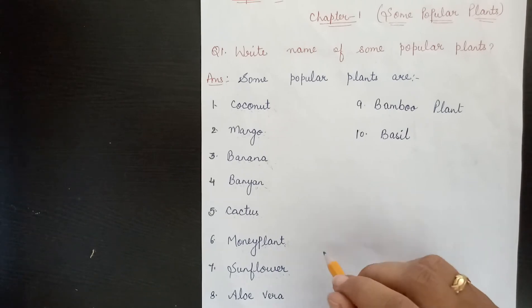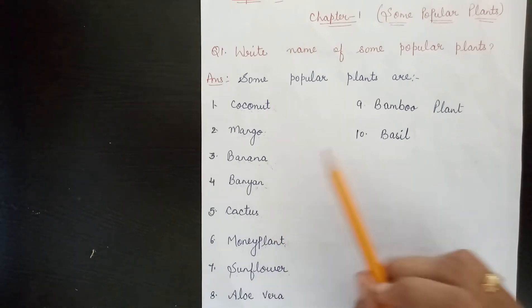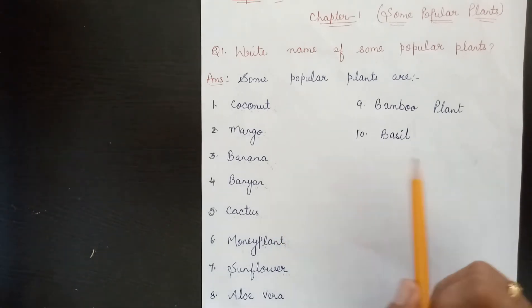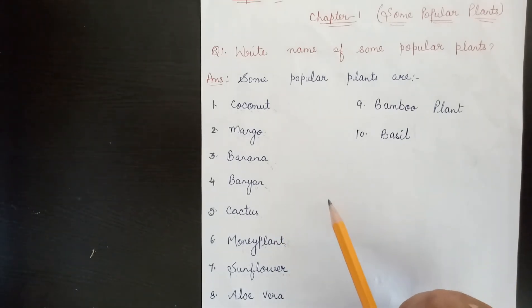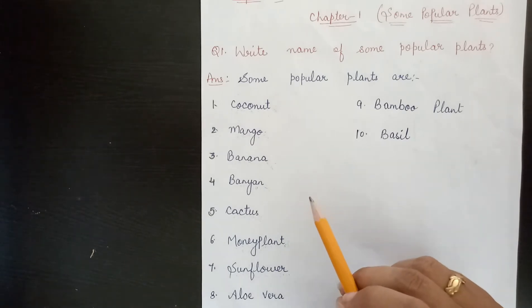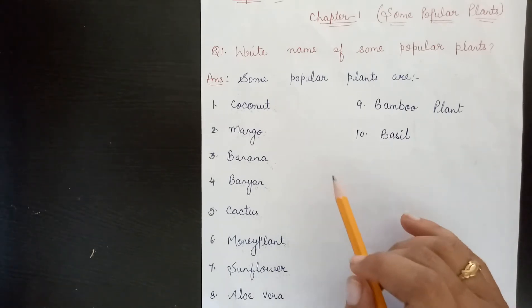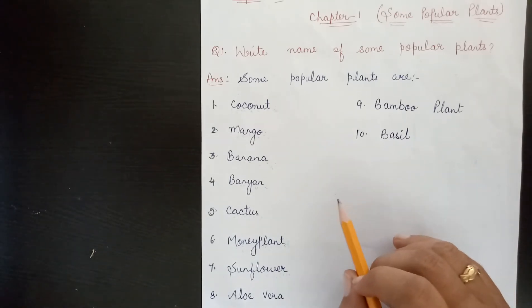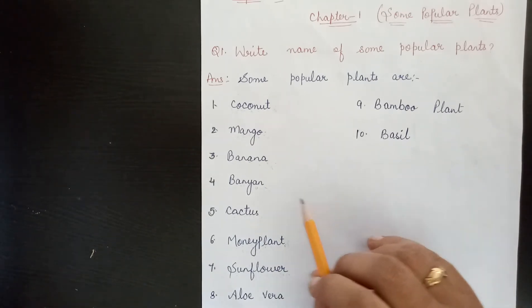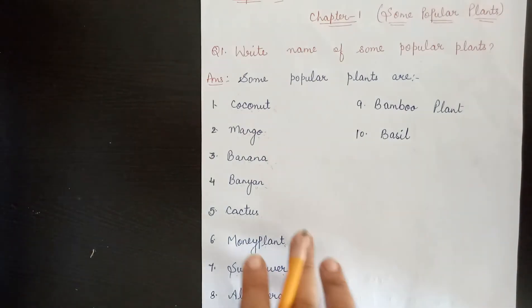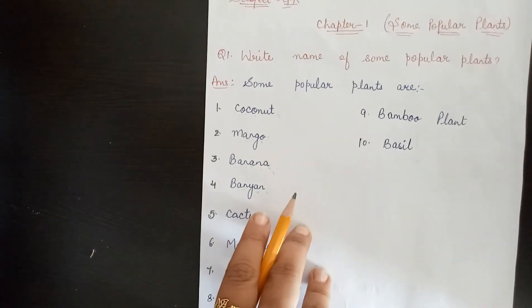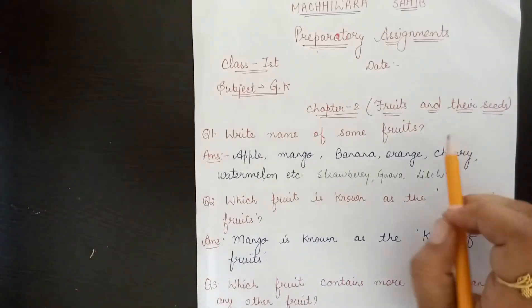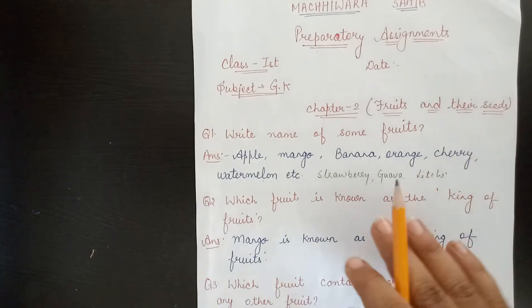For the popular plants exam, you should learn at least eight plants. You will have to learn eight popular plants. Now move to chapter number two: Fruits and Seeds.